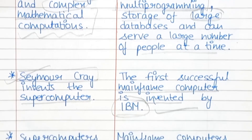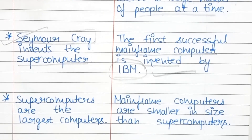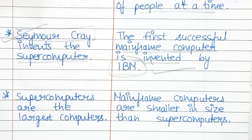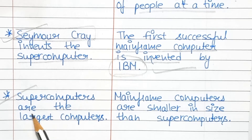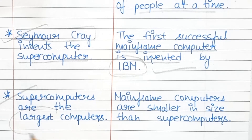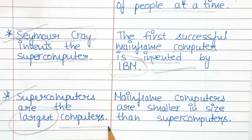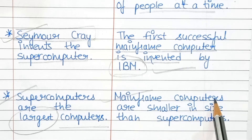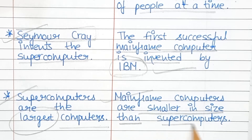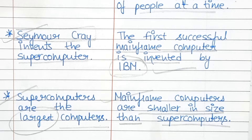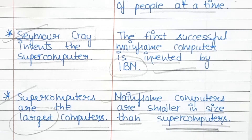The next difference is size. Supercomputers are the largest computers, while mainframe computers are smaller in size than supercomputers.